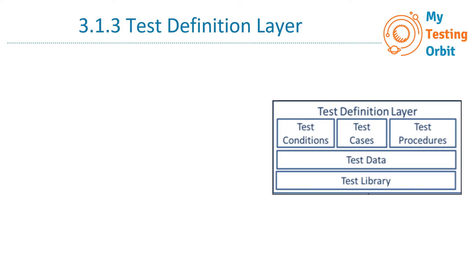As we are familiar with what is included in the test definition layer, let's go through the syllabus. First, it talks about tool support for specifying test cases at a high and/or low level. In high-level test cases, software functionality is defined at a high level without going into much detail. For example, for login functionality, a high-level test case will state that a user should be able to log in successfully with valid credentials.